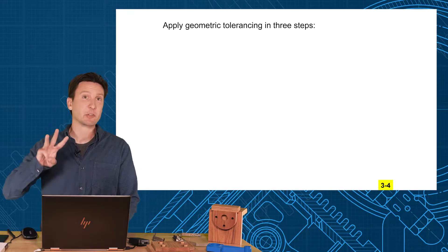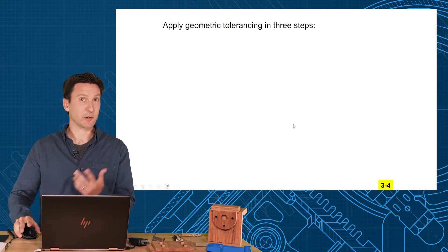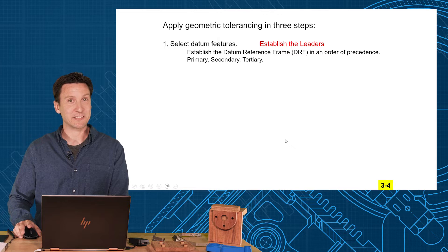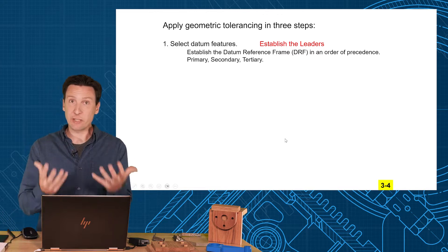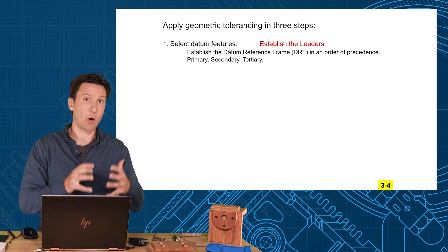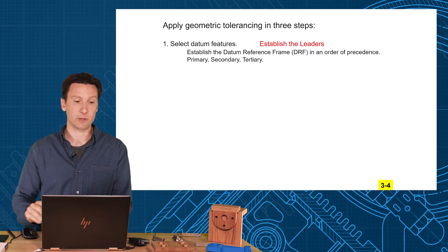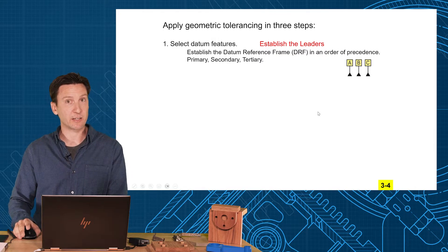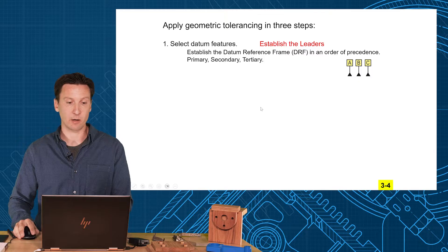We want to apply geometric tolerancing in three steps. In the first step, the most important is selecting datum features. We want to establish the leaders—the datum reference frame—that all our position and profile tolerances will be applied to. We're going to pick a primary, secondary, and tertiary datum feature using these symbols.